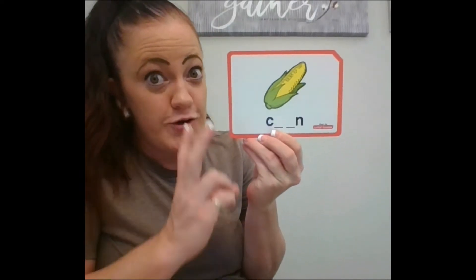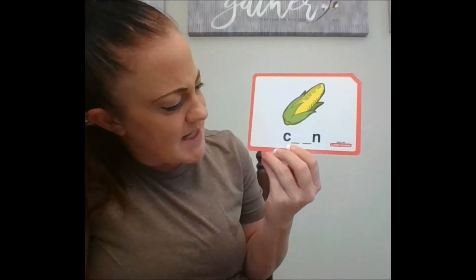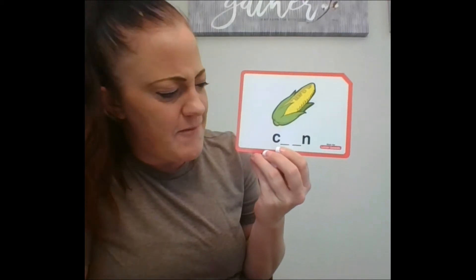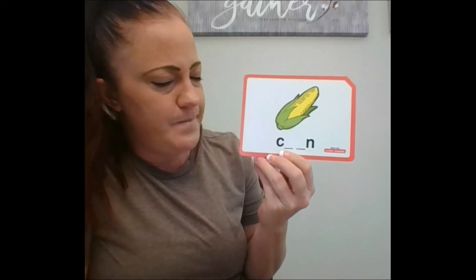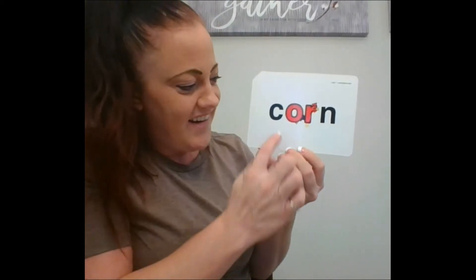All right, a couple more. Uh-oh, this one's missing two letters. What is that? C-O-R-N. C-O-R-N. So what are the missing letters? We've got the C and we've got the N. The missing letters are O-R. C-O-R-N.